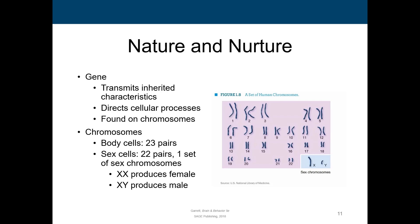If we're talking about chromosomes, we have 23 pairs. There are 22 pairs in the regular cells, but then we have one set of sex chromosomes. You get one chromosome from your mother and one from your father. If you get XX, that produces a female. If you get XY, you guessed it, that produces a male.